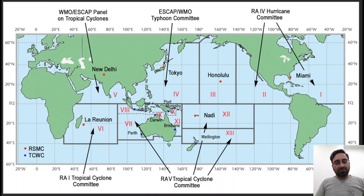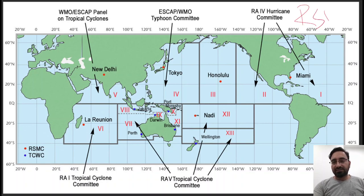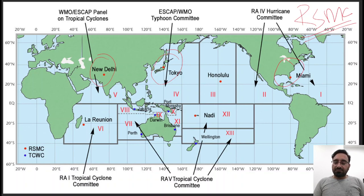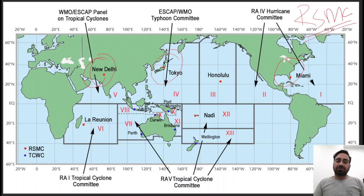We have Regional Specialized Meteorological Centers, what we call RSMCs. These RSMCs are there throughout the globe — we have one called RSMC New Delhi, one in Tokyo, and one in Miami. In total we have six RSMCs which are responsible for naming the tropical cyclones in their respective oceans. In our northern Indian Ocean, it is RSMC New Delhi which is responsible for naming the cyclones that come in our Indian Ocean.